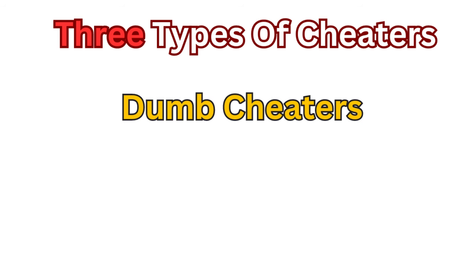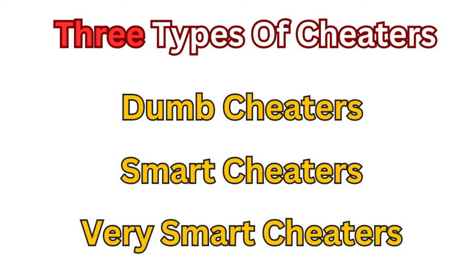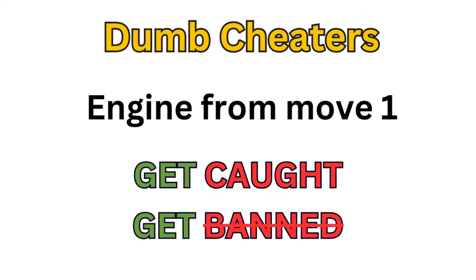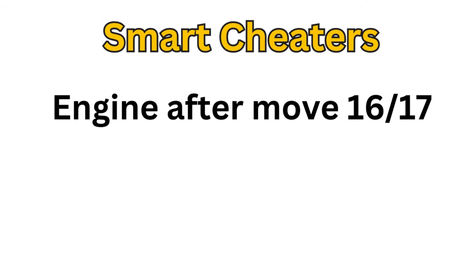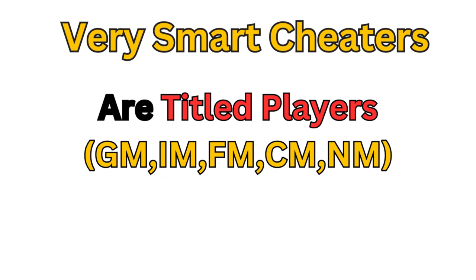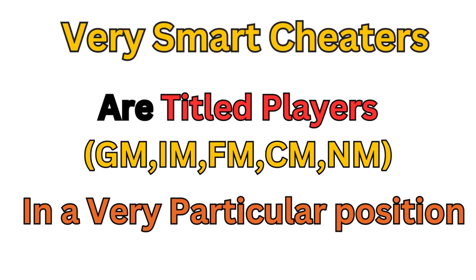So with that, there are 3 types of cheaters: Dumb Cheaters, Smart Cheaters and Very Smart Cheaters. Dumb Cheaters use the engine from move 1, get caught and get banned. Smart Cheaters use the engine after playing their 16-17 moves but still get caught and banned. Very Smart Cheaters are titled players who use the engine in a very particular position and then grind the position by themselves.